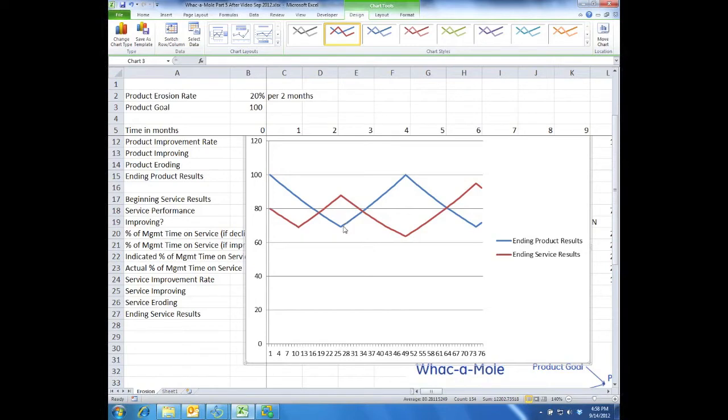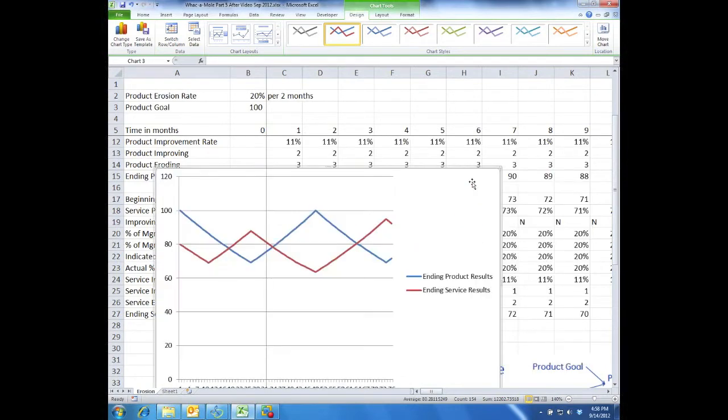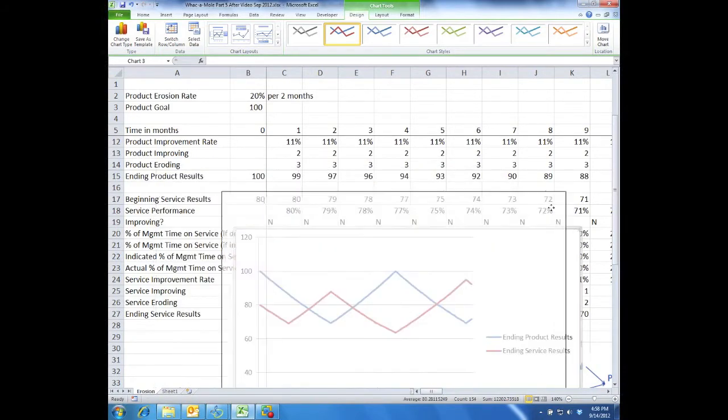So you can see that basically you're in a game of whack-a-mole. You're either focusing on service or you quit that and you're focusing on product or you stop that and you're focusing on service again. Just like that arcade game where you're going from one problem to another problem. That's basically the model of whack-a-mole and that's how you do it in Excel.